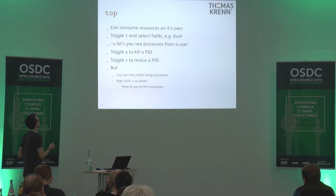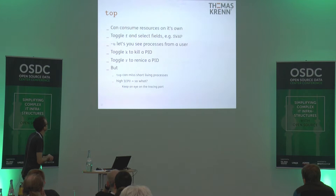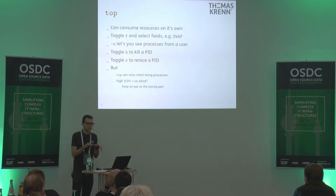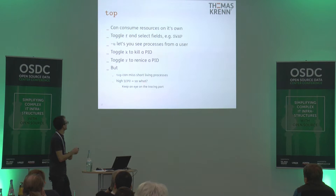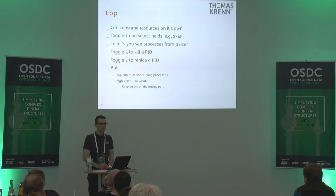You can use the F button to toggle and select fields, for example for swap. When executing with the minus-U option you see processes from a specific user. You can also use K to kill a PID when you're having some issue — but it can miss short-lived processes.